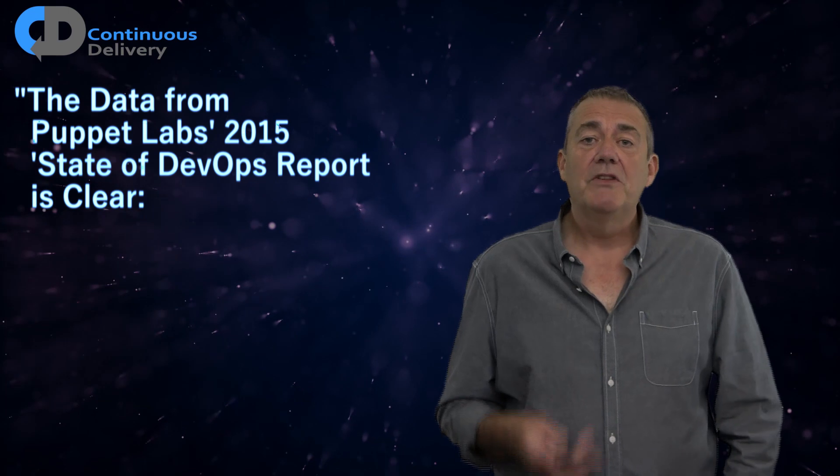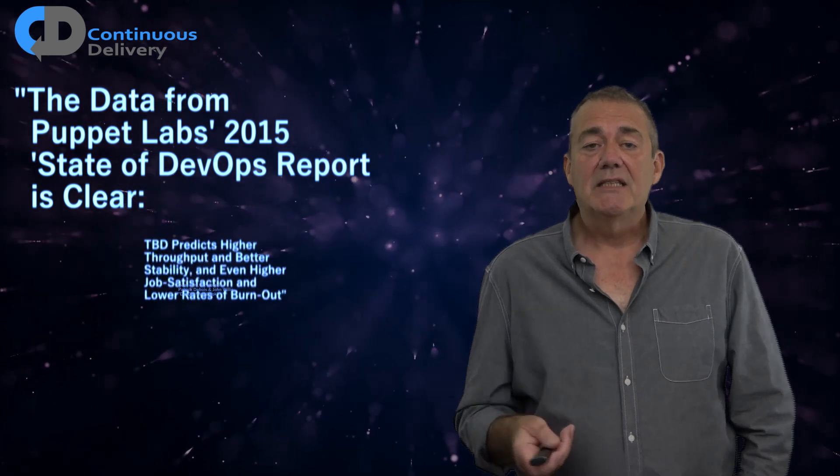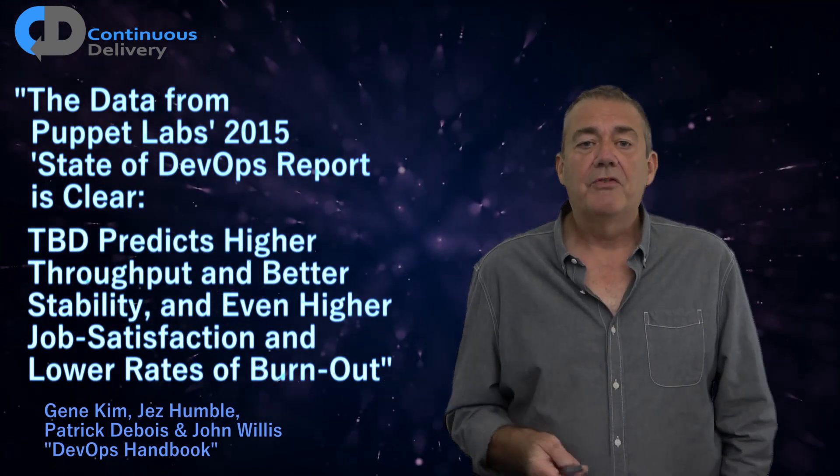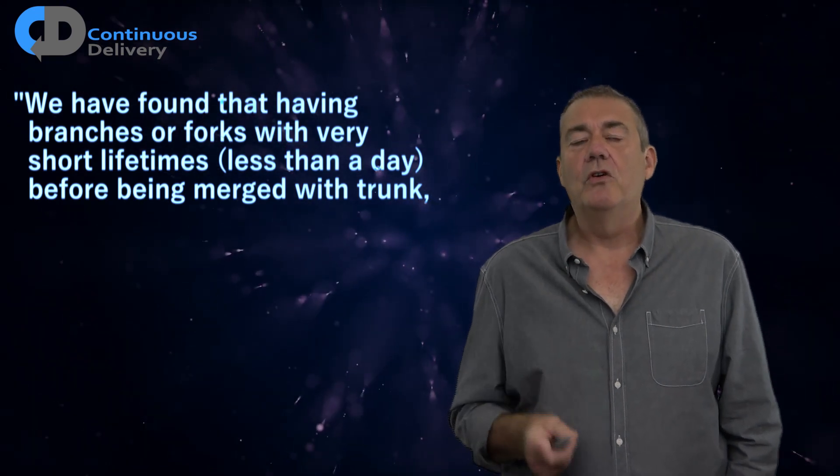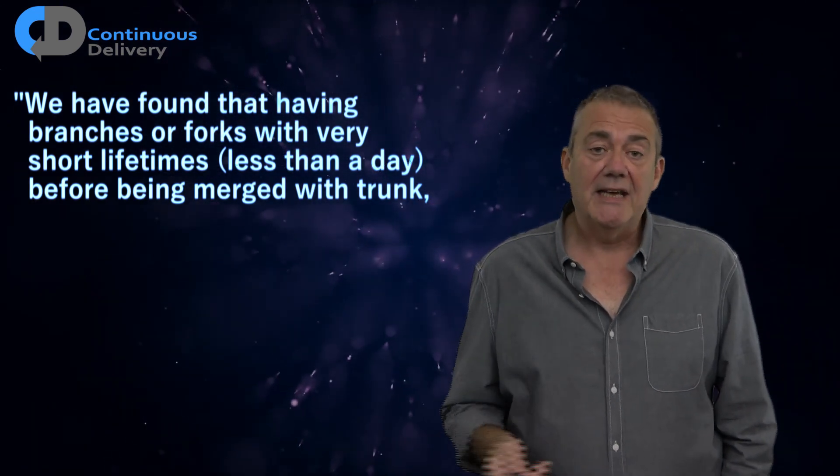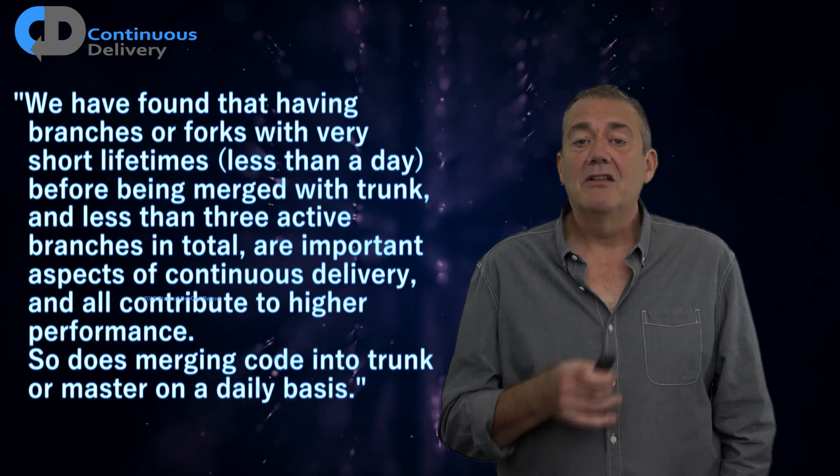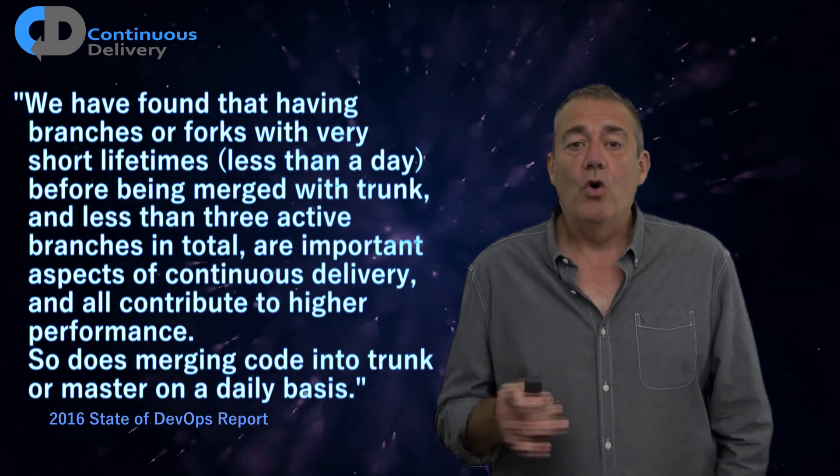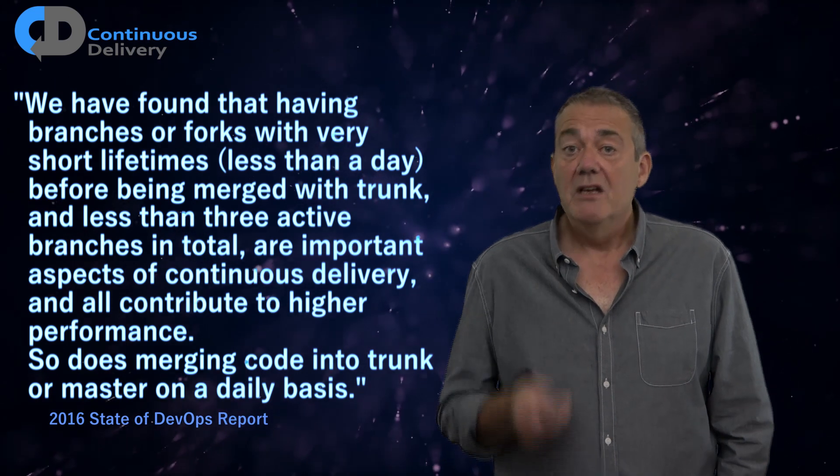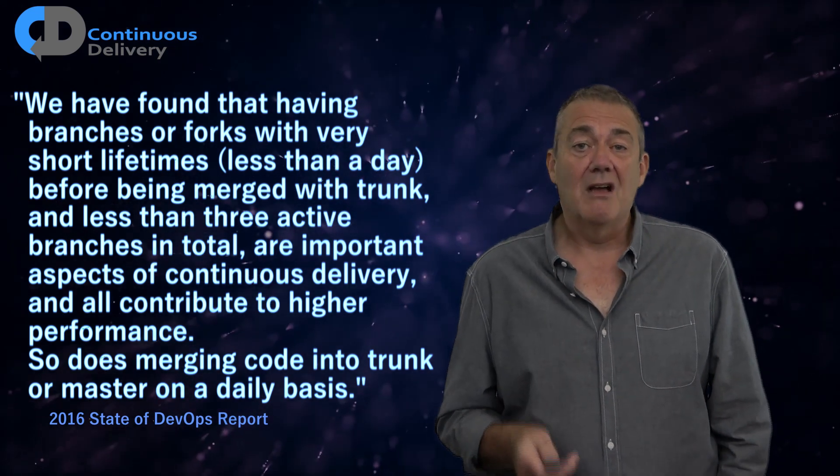The data from the 2015 version of the State of DevOps report from Puppet Labs is pretty clear. It says: trunk-based development predicts higher throughput and better stability, and even higher job satisfaction and lower rates of burnout. We have found that having branches or forks with very short lifetimes, less than a day, before being merged into trunk, and less than three active branches in total, are important aspects of continuous delivery and all contribute to higher performance. So does merging code into trunk or master on a daily basis.